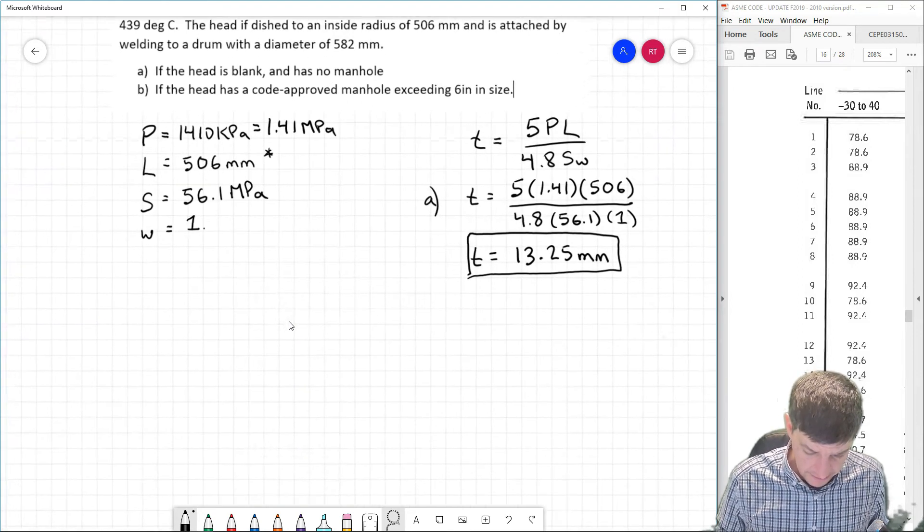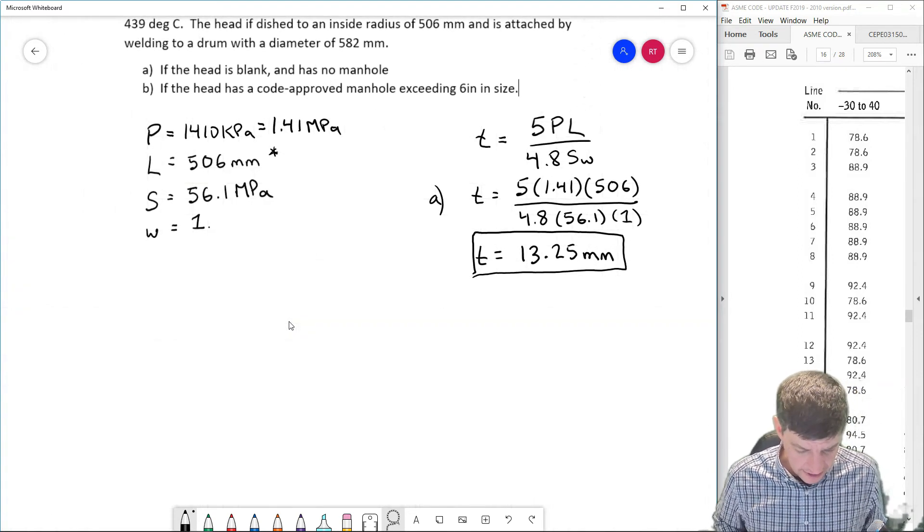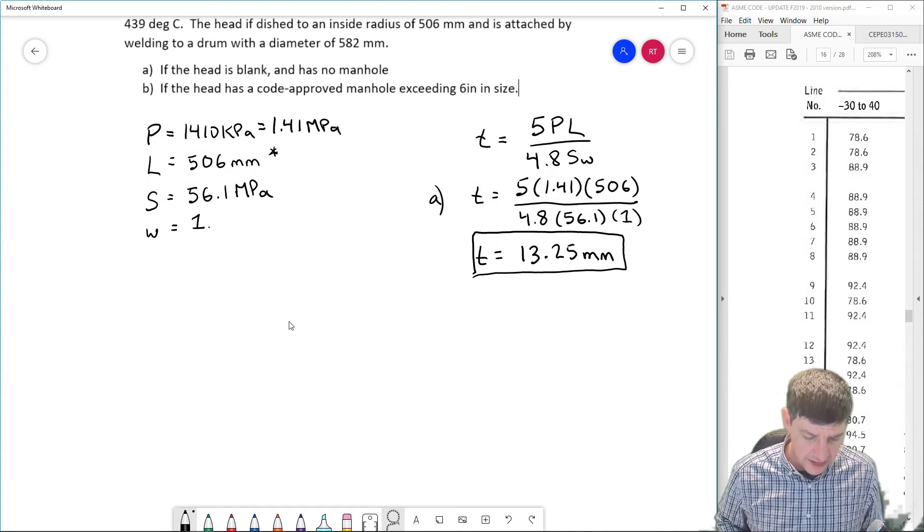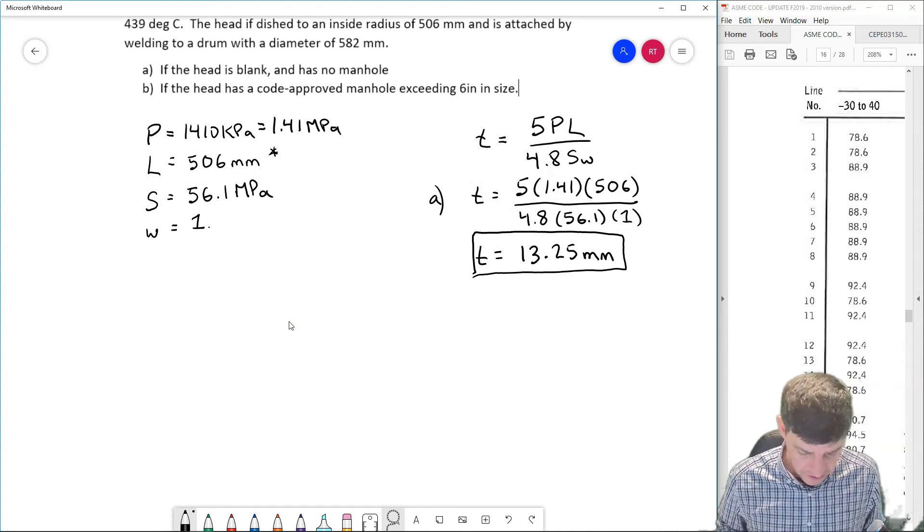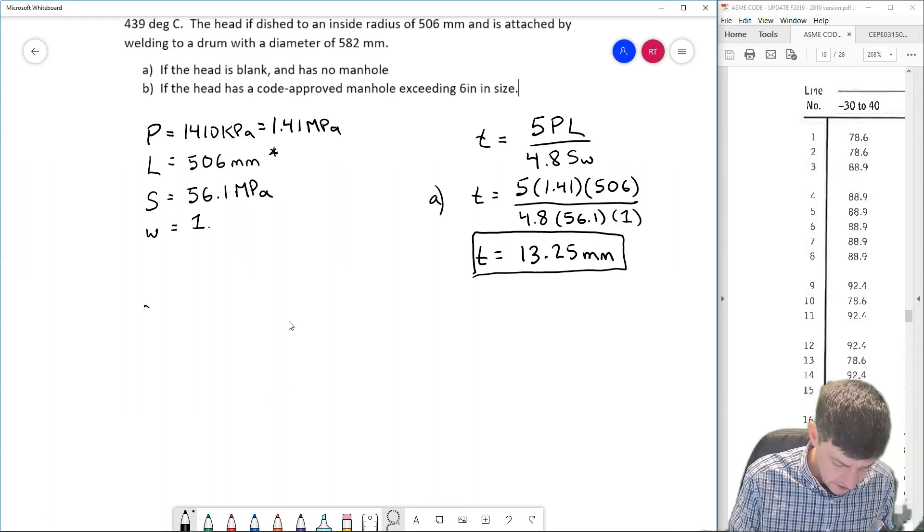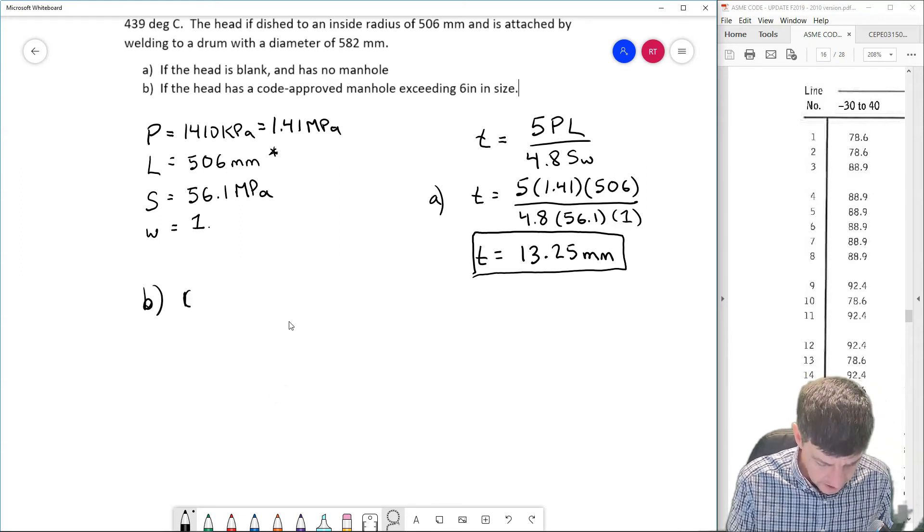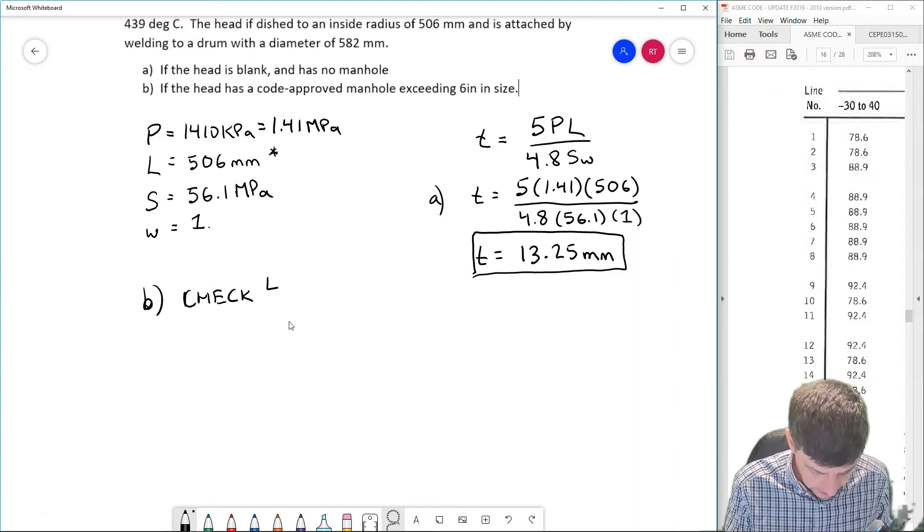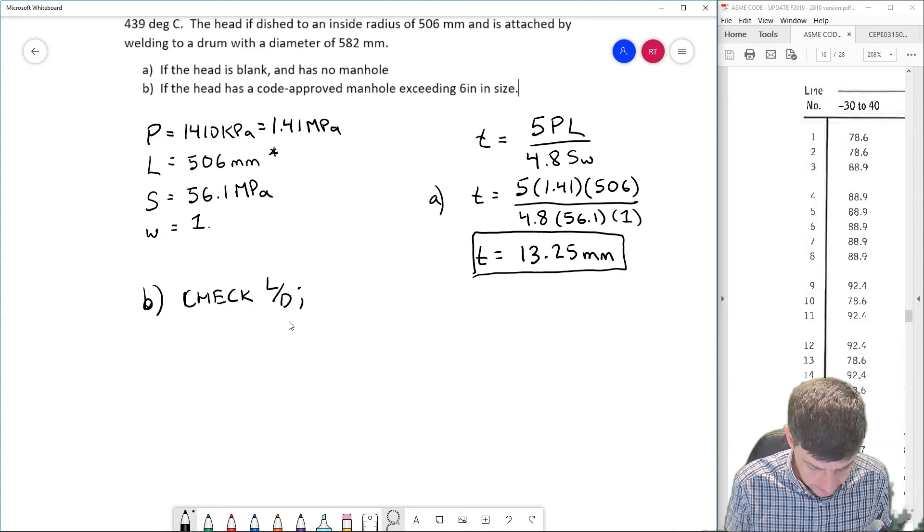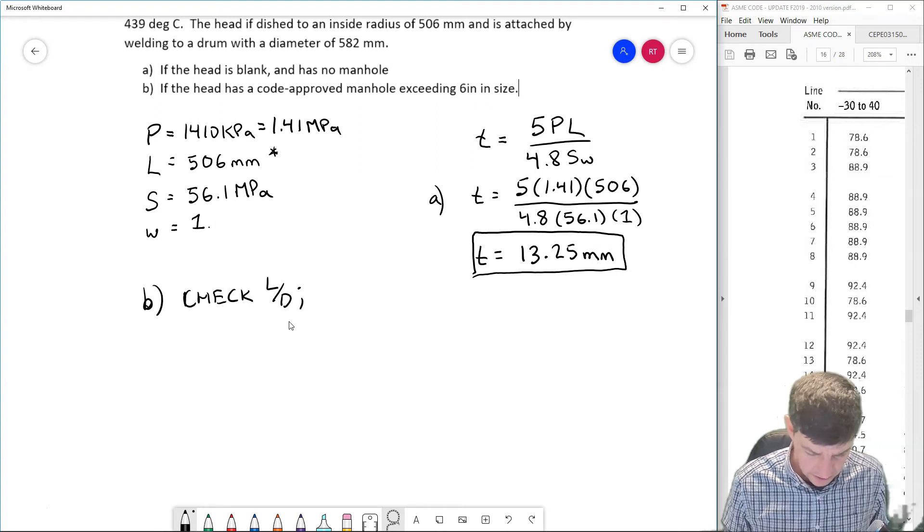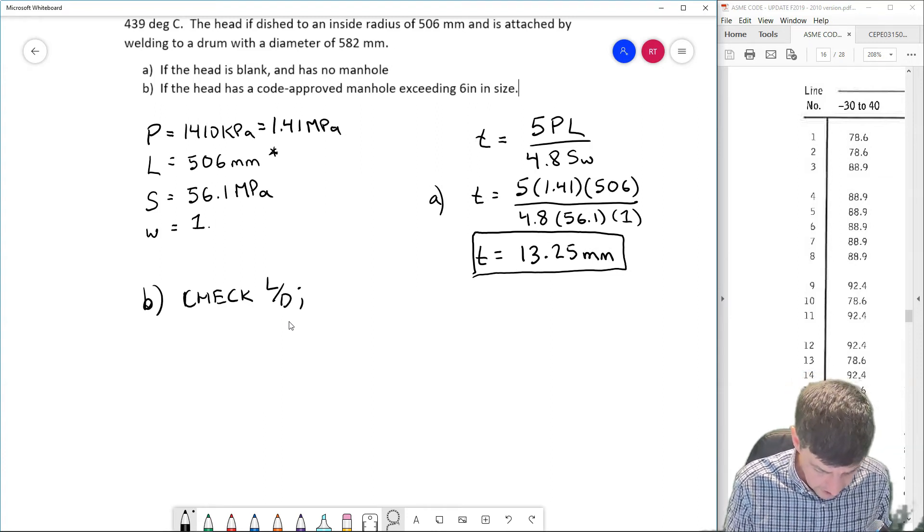Okay. If I had a code approved manhole, I have a few extra things that I need to do. So in my part B, the first thing that I want to do is check my L upon D.